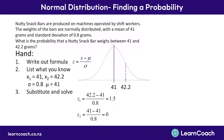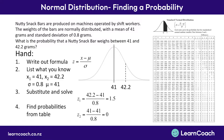We find two answers for our z-score: 42.2 grams is 1.5 standard deviations away from the mean. And no surprises — the z-score of 41 is zero standard deviations from the mean, because 41 is also the mean. So we're on the right track.